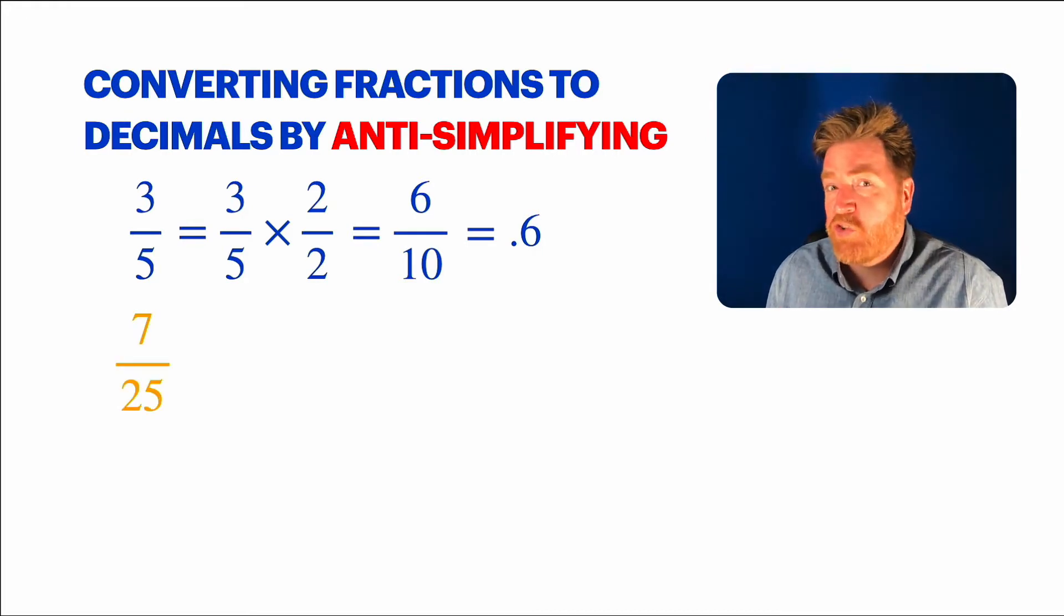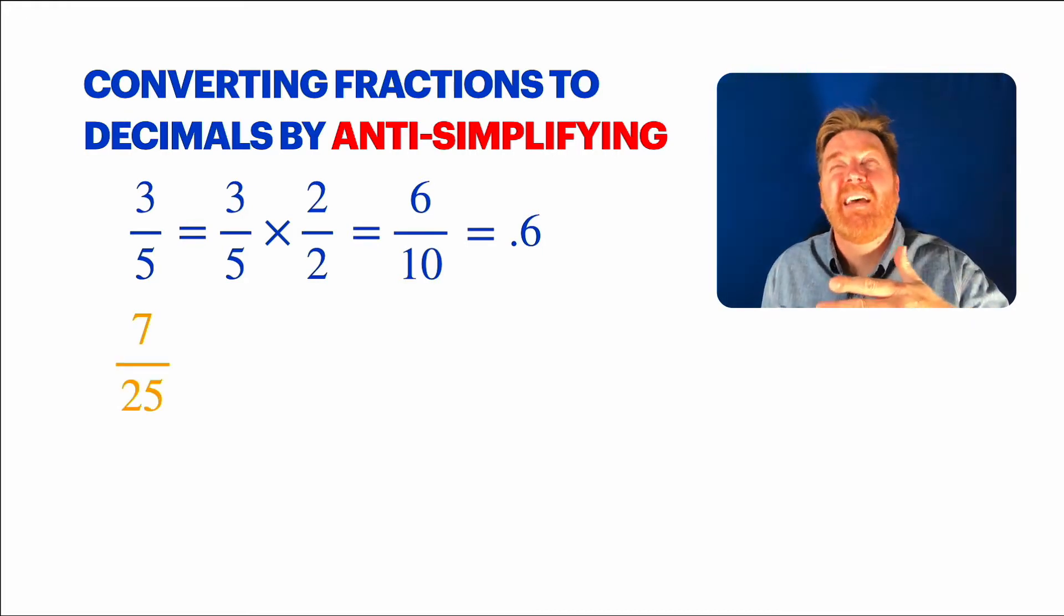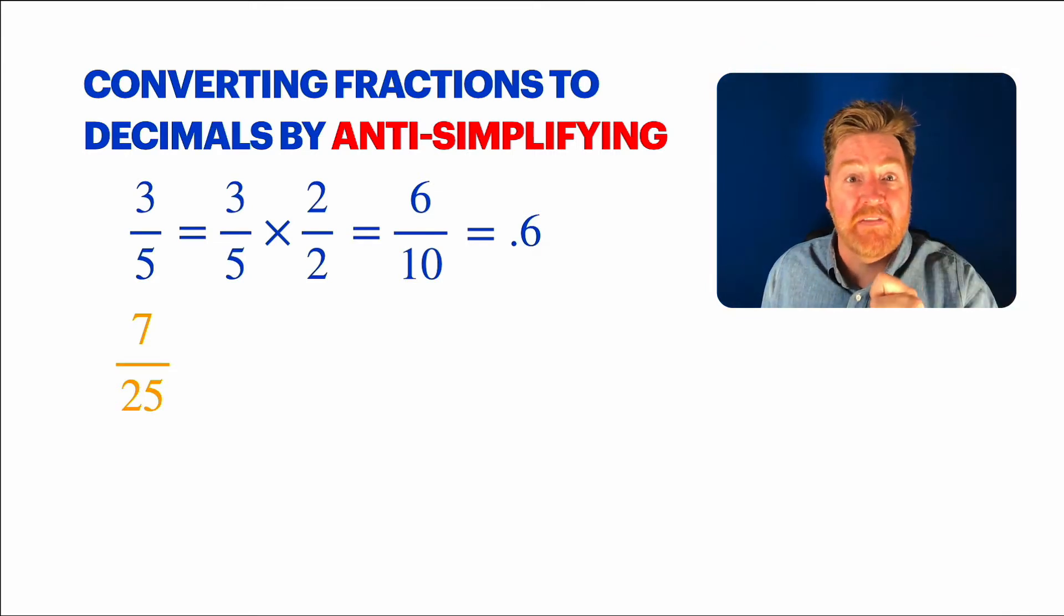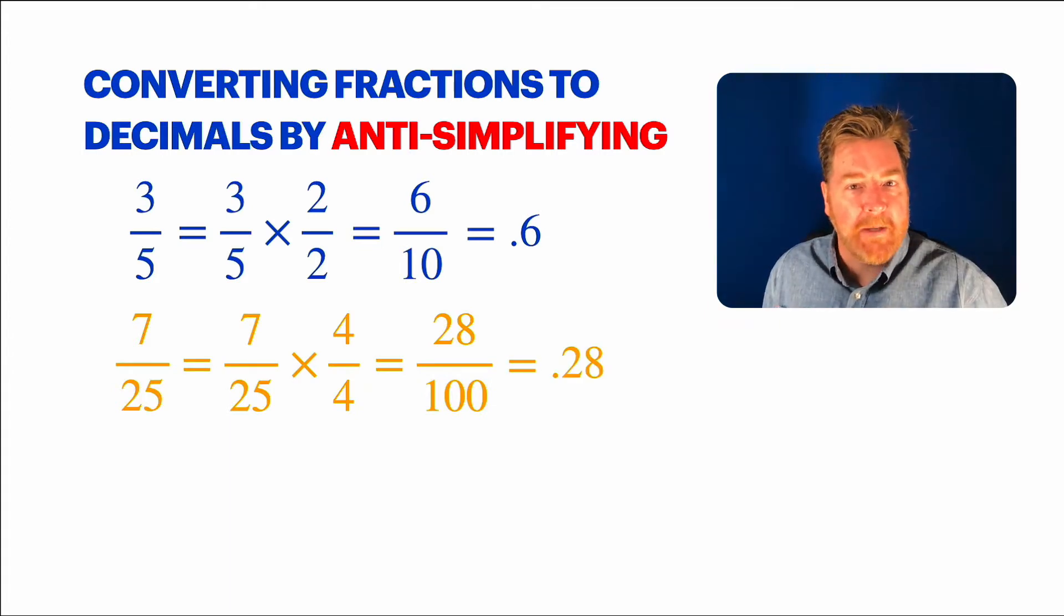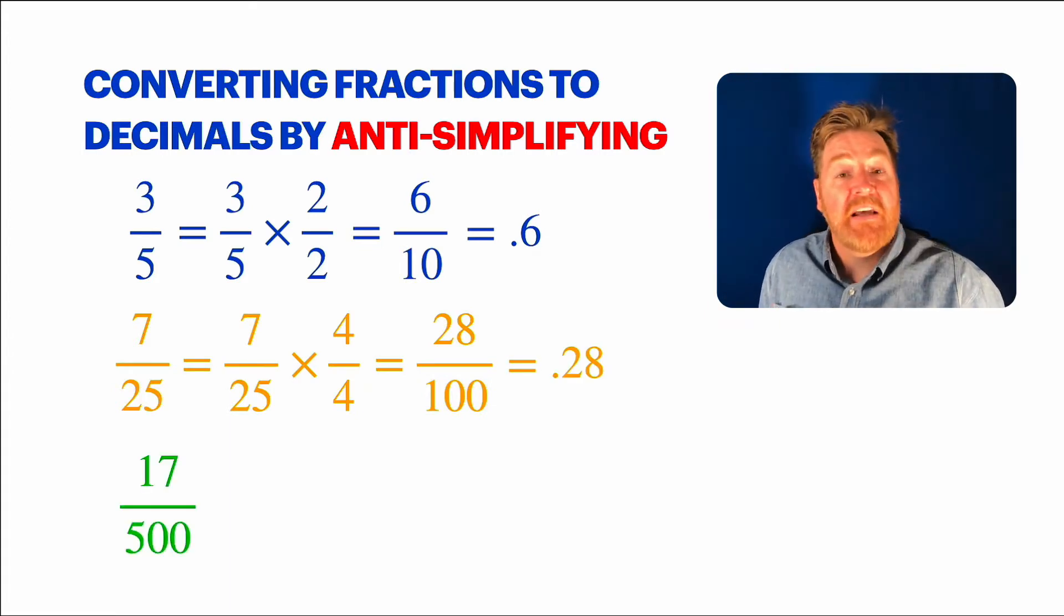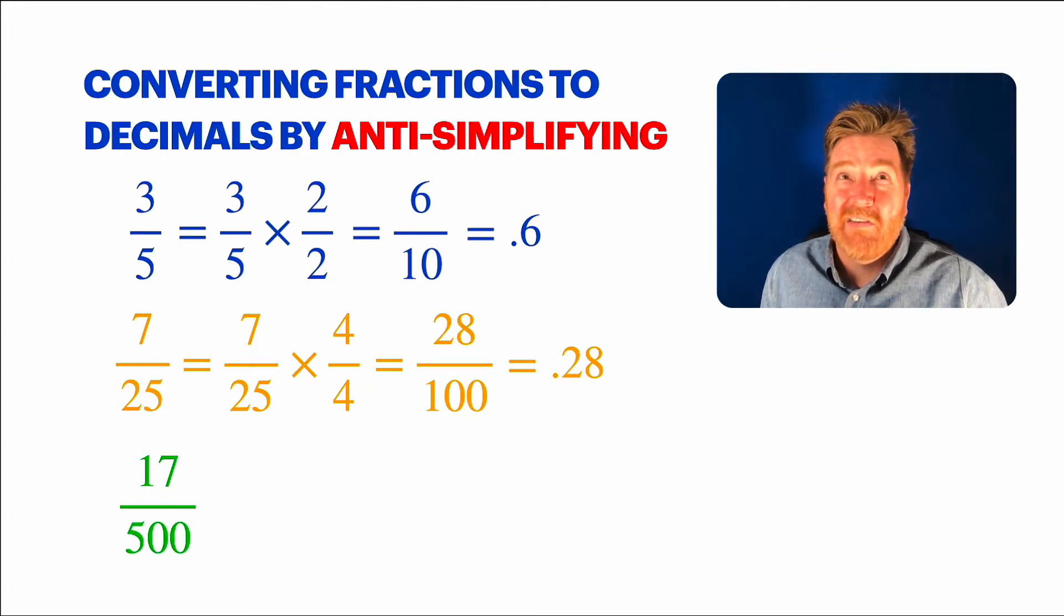So that's converting by anti-simplifying. A number like 7/25, can I make it tenths? Nah. Hundredths? Yes, hundredths. So multiply it by 4/4, that's 28 hundredths. Game over. There's our decimal, 0.28. Here's another one, 17/500. Well, tenths, not hundredths, no, thousandths.